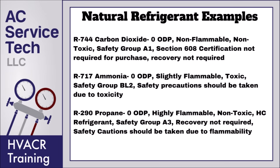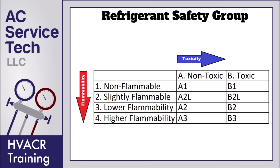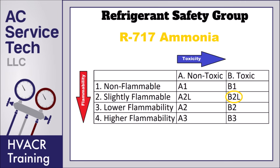This restricts where R290 can be installed. On the refrigerant safety group chart, moving to the right shows A is non-toxic and B is toxic. Moving down shows: 1 is non-flammable, 2 is slightly flammable, 3 is lower flammability, and 4 is higher flammability. R290 is non-toxic but highly flammable, which is why it has a safety group of A3. Ammonia is toxic and slightly flammable, which is why it has a B2L rating.